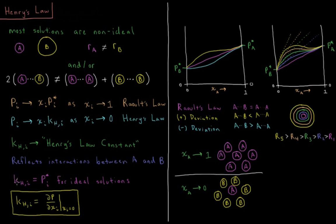For ideal solutions, the Henry's Law constant is just the vapor pressure of the pure liquid component I. The Henry's Law constant of a component is equal to the partial derivative of vapor pressure with respect to the mole fraction of component I, evaluated at its mole fraction being zero.